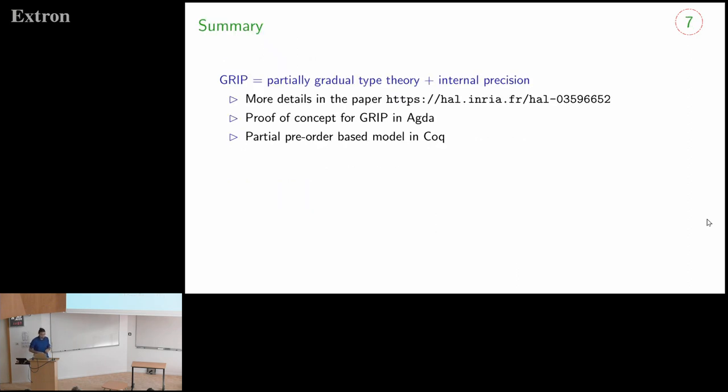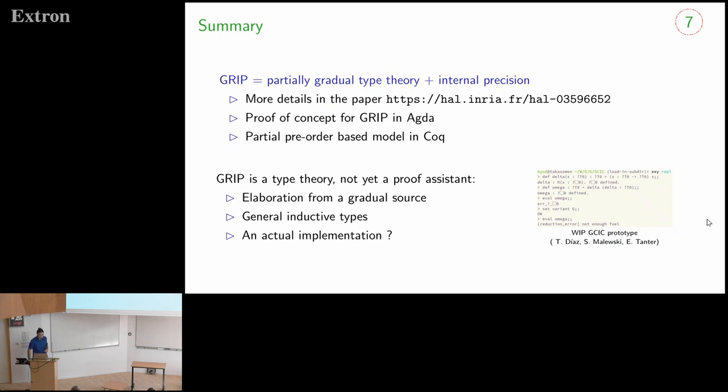So to summarize, I presented some work on partially gradual type theory, which internalizes precision in order to reason about what is gradual in this language. There are more details in the paper, which is online and has been conditionally accepted at ICFP. There is a proof of concept for GRIP in Agda. You can program in Agda. It's developed with rewriting rules. And finally, I have a partial pre-order based model in Coq that formalizes this intuition. And there is further work to go to a full gradual proof assistant. But I think I will stop there and leave it for questions. Thank you.